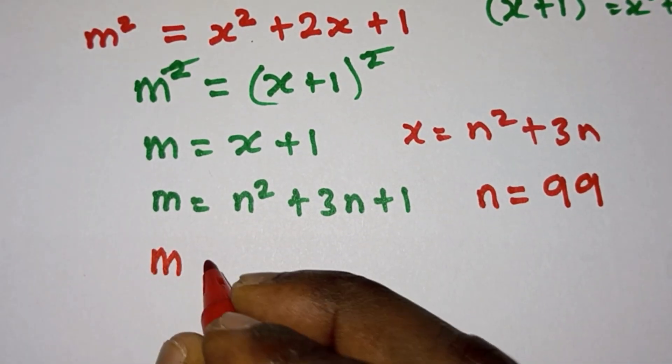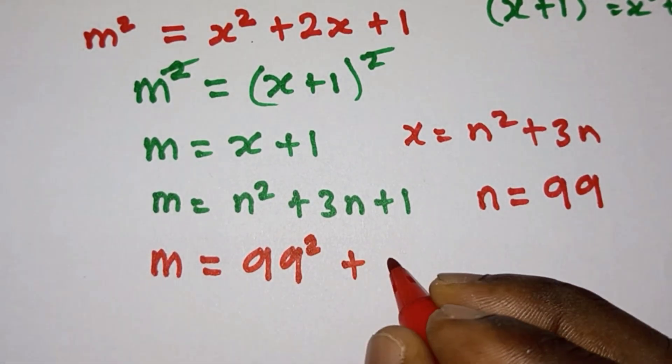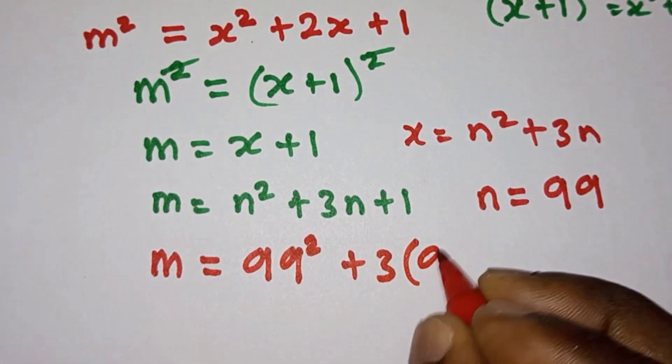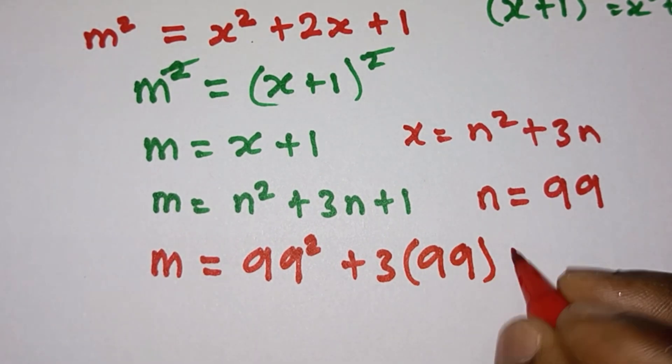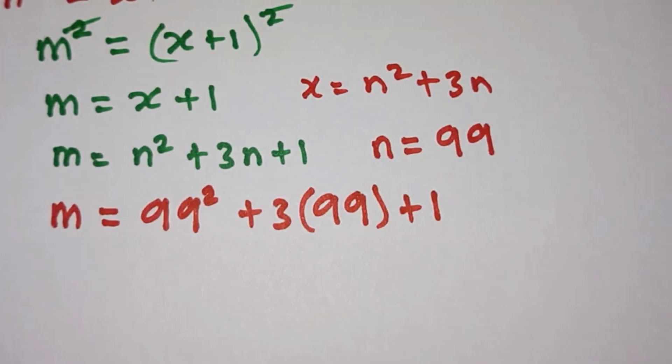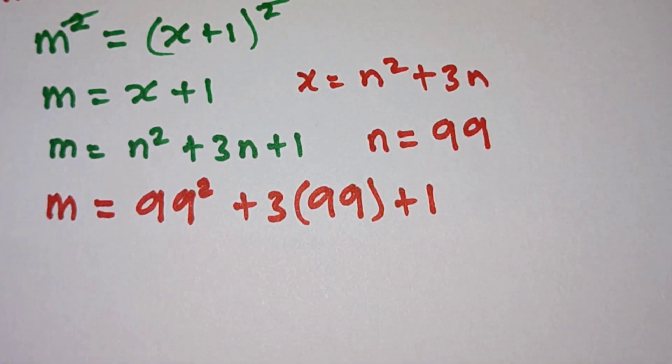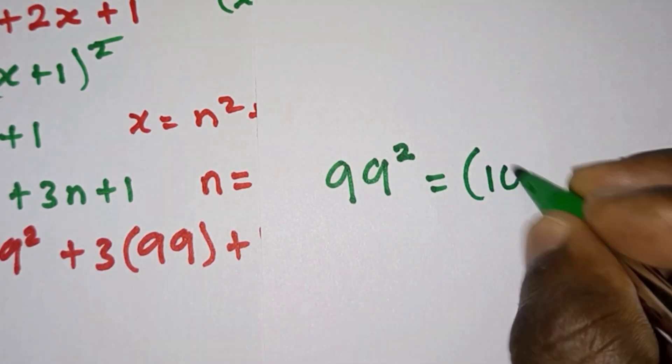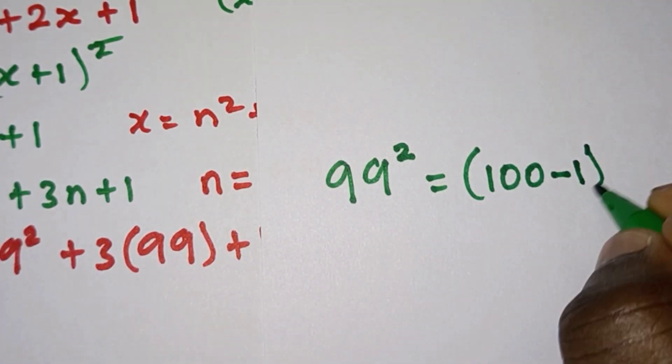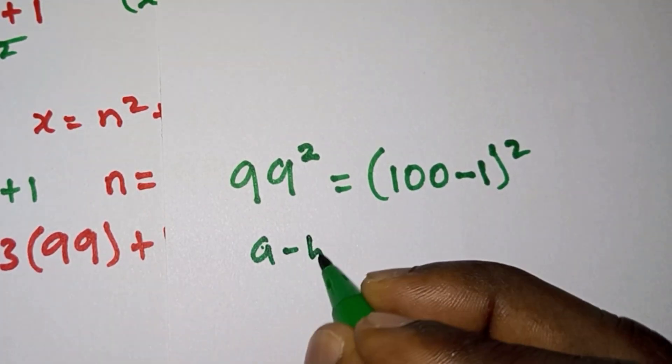m = 99² + 3(99) + 1. Remember we are doing this without using any calculator. So how do we find 99²? We can write 99² as (100-1)² and we know that (a-b)² = a² - 2ab + b².